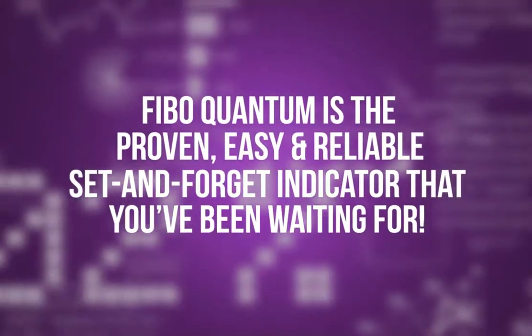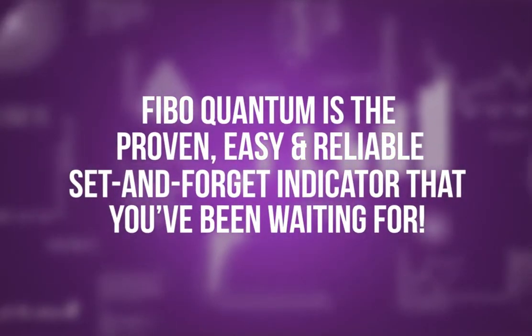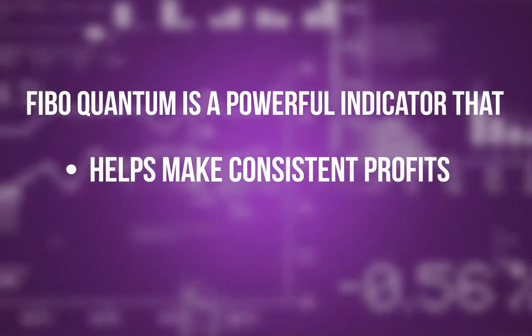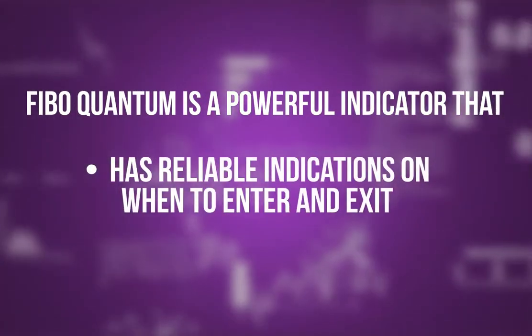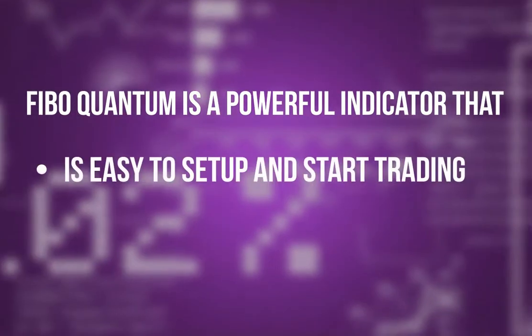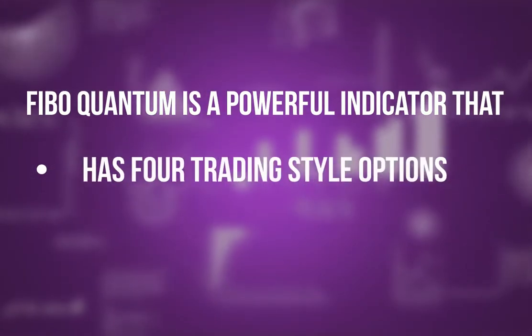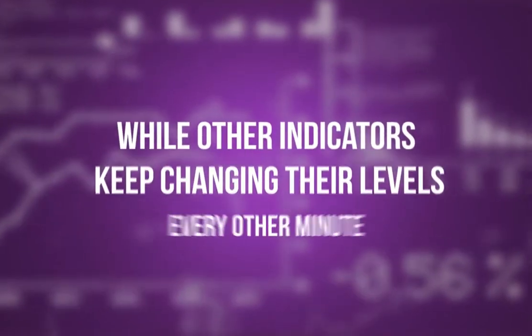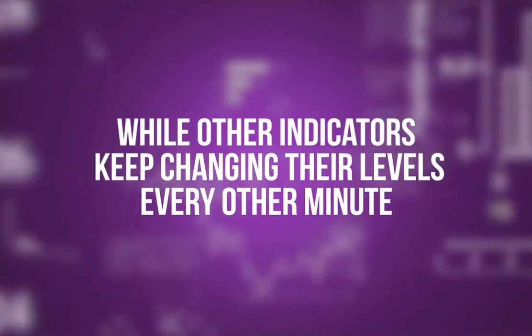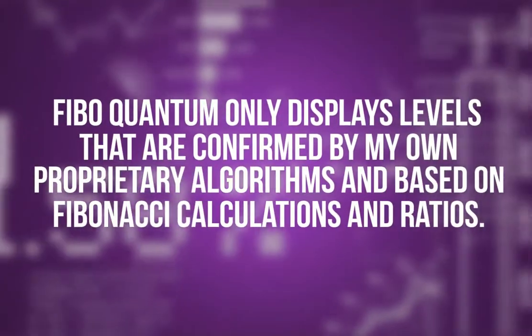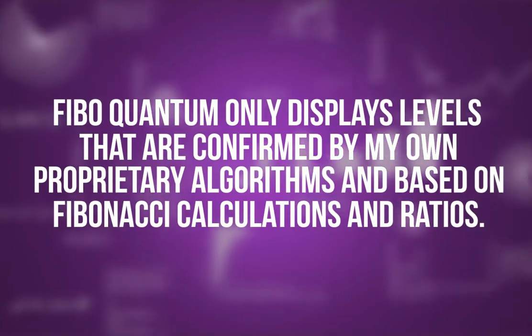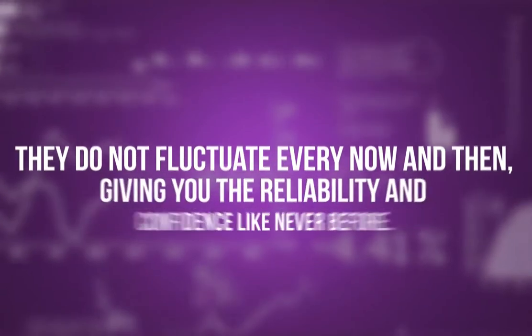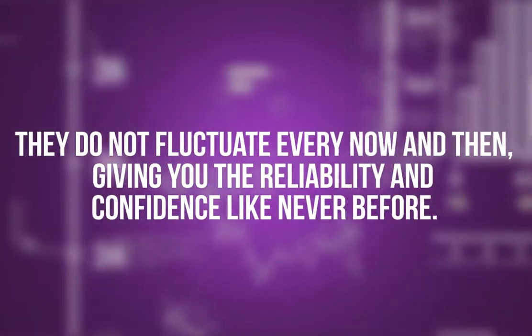FiboQuantum is the proven, easy and reliable set and forget indicator that you've been waiting for. FiboQuantum is a powerful indicator that helps make consistent profits, has reliable indications on when to enter and exit, is easy to set up and start trading, has four trading style options, has three different signal alerts. While other indicators keep changing their levels every other minute, FiboQuantum only displays levels that are confirmed by my own proprietary algorithms and based on Fibonacci calculations and ratios. They do not fluctuate every now and then, giving you the reliability and confidence like never before.